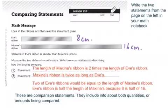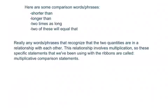I want to just make sure you know that those kinds of statements are called comparison statements. Comparison statements include information about both quantities or amounts being compared. We're going to do a lot of work with that today. So make sure you understand that concept. I'm comparing two things. So here are some words or phrases that you might hear in comparison statements. We might say shorter than, longer than, two times as long, two of these will equal that. Those kinds of phrases or words are comparison words and phrases. Really, we should know that any words or phrases that recognize the two quantities are in relationship with each other are what we're talking about when we talk about comparison statements.